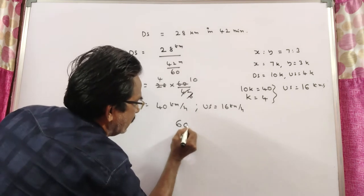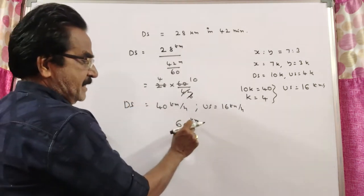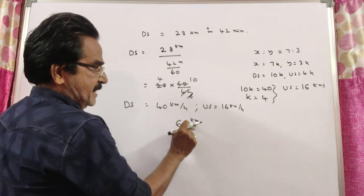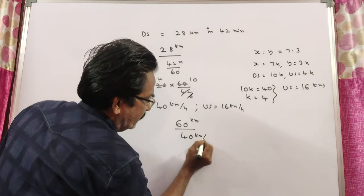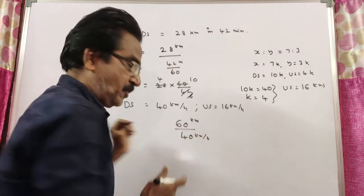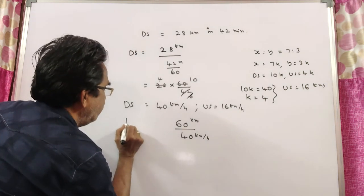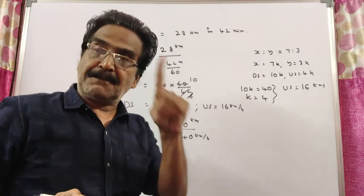60 kilometers downstream, time means distance by downstream velocity 40 kilometers per hour. This is the time taken to travel 40 kilometers upstream.